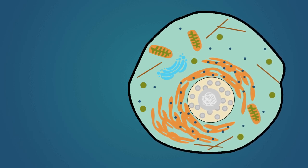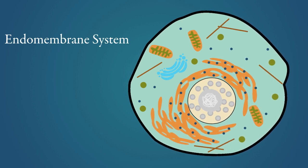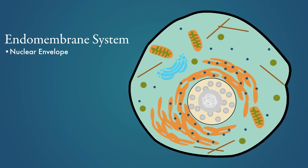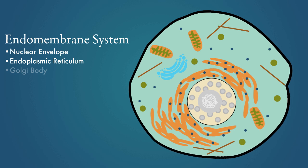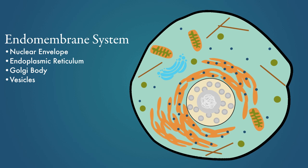The endoplasmic reticulum is connected to the nuclear envelope as a part of a system called the endomembrane system. The endomembrane system includes the nuclear envelope, the endoplasmic reticulum, Golgi body, and vesicles.